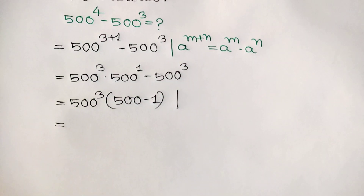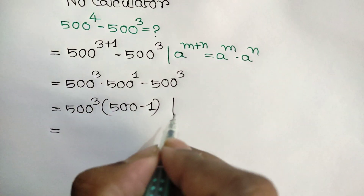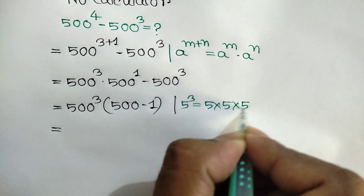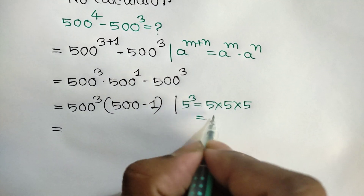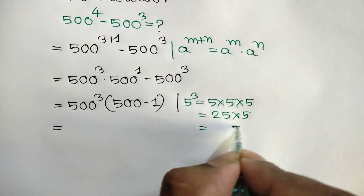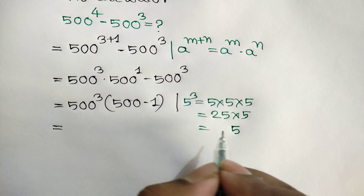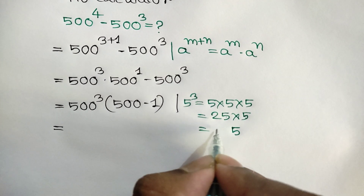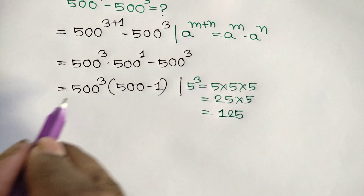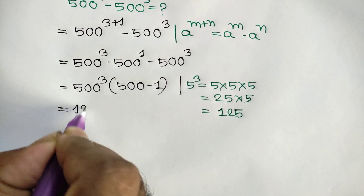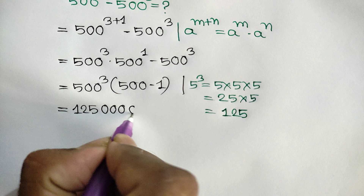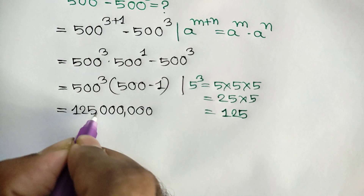Now we know that 5 cubed is equal to 5 times 5 times 5, which is 25 times 5. 5 times 5 is 25; carry 2, 5 times 2 is 10, 10 plus 2 is 12. So 5 cubed equals 125. That means 500 cubed is 125 with 6 zeros.